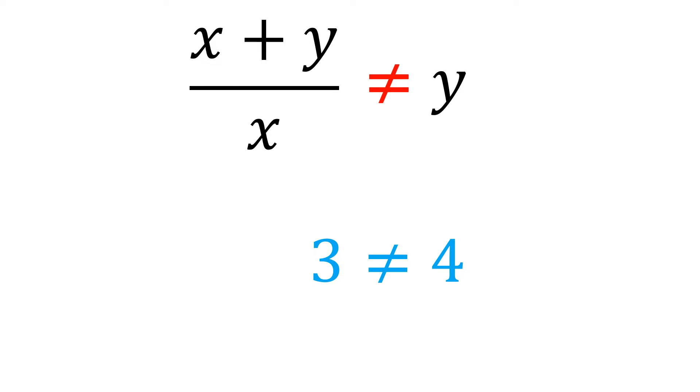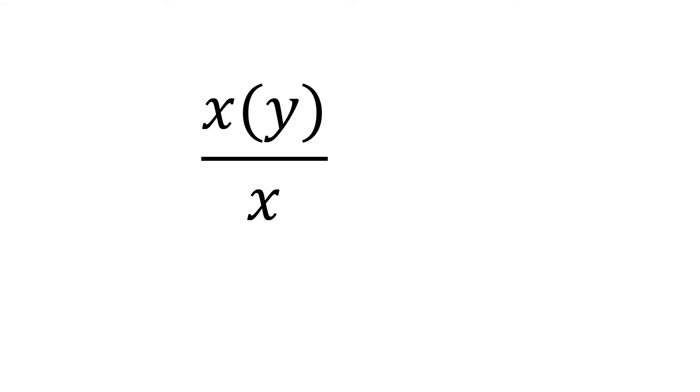For example, let's say we have x times y over x. Now in this case, it is correct to cancel x, which simplifies to y. You may substitute x and y with numbers to convince yourself.